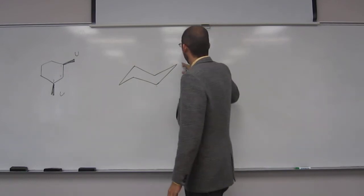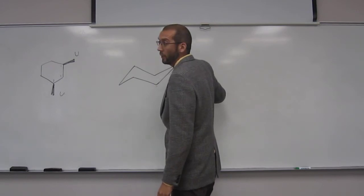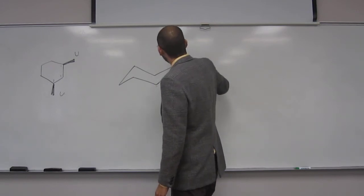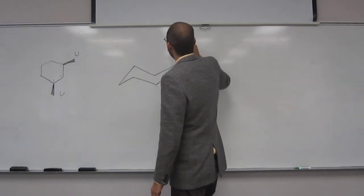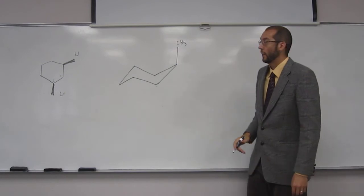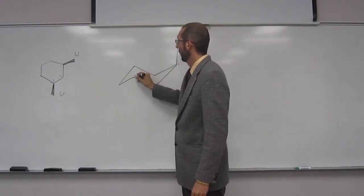So I like to start here as carbon 1. So what is it going to be, axial or equatorial? Axial, because axial's up. So as a methyl group, that's 1, 2, 3.